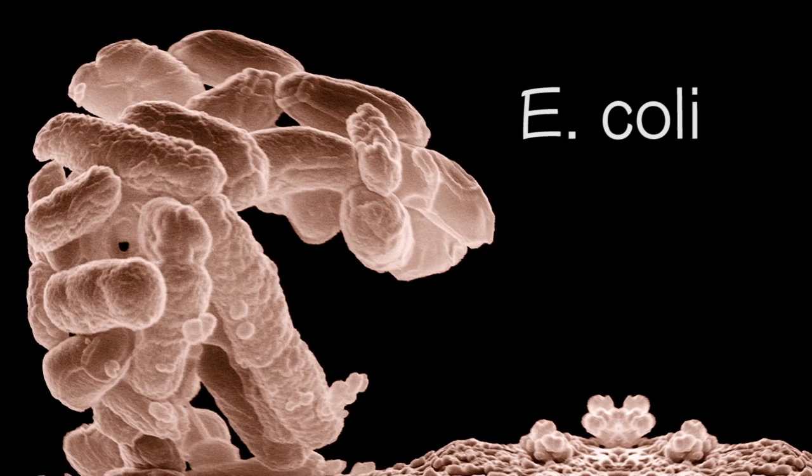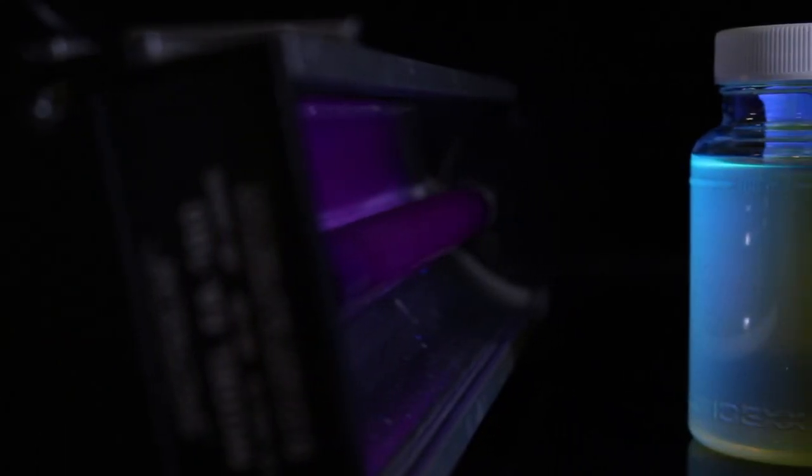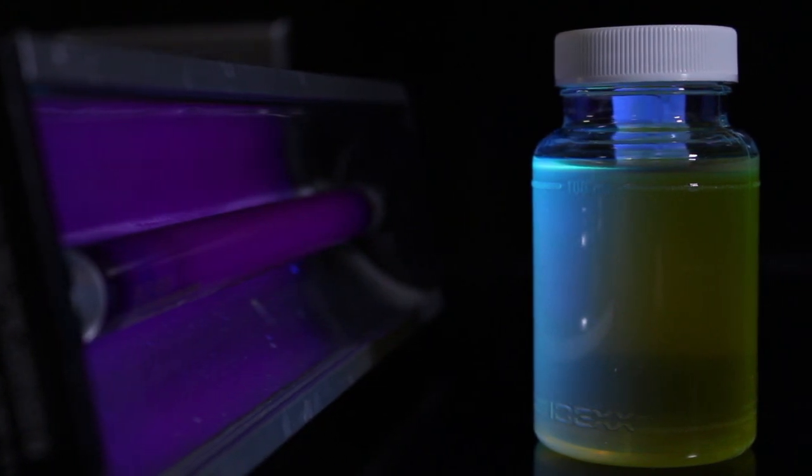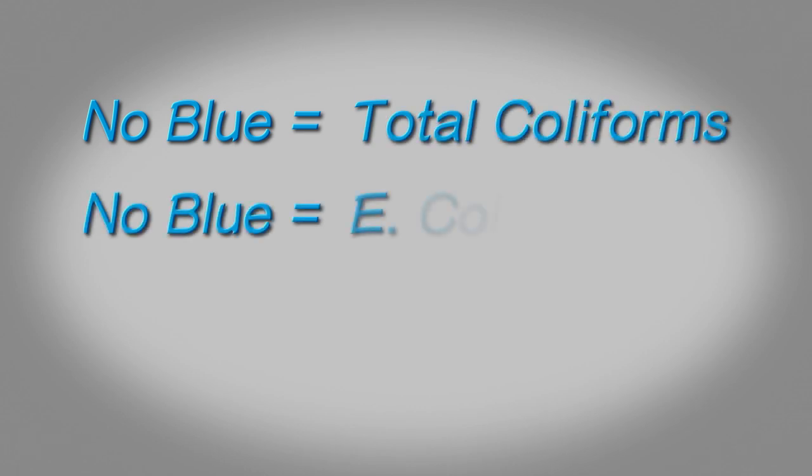To make this determination, we take the same unopened vial that produced a yellow color with the MMO and place it under a UV lamp. No blue color means the sample is positive only for total coliforms and negative for E. coli.